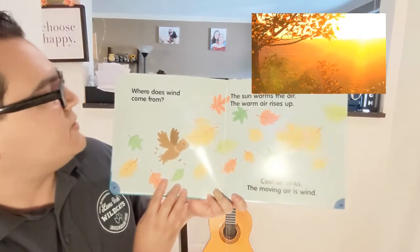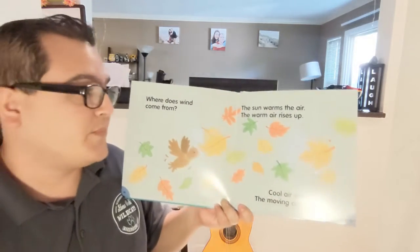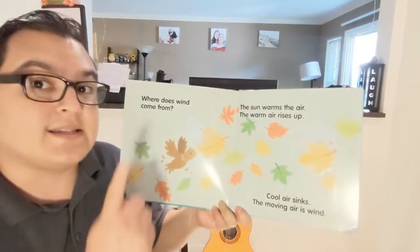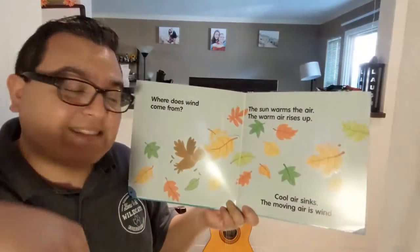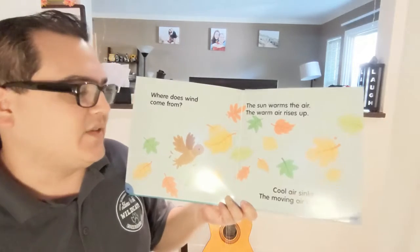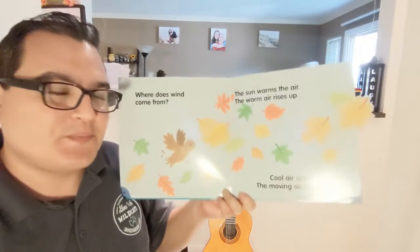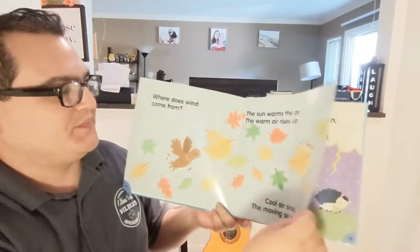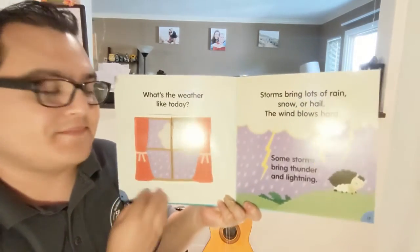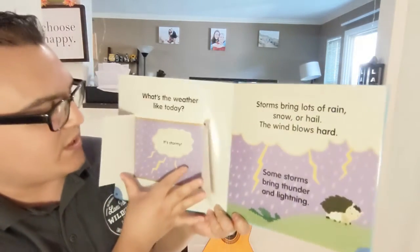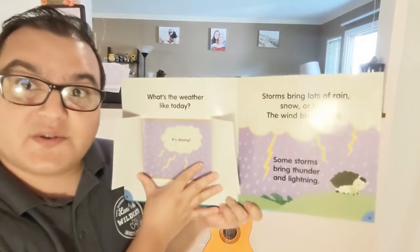Where does wind come from? The sun warms the air. The warm air rises up, cool air sinks. The moving air is wind. What's the weather like today? Let's open the window. It's stormy!